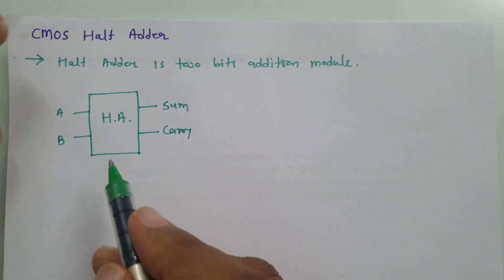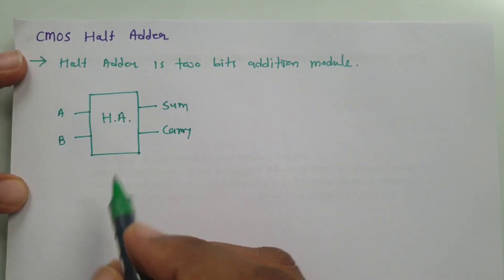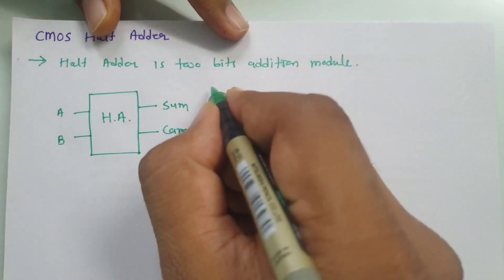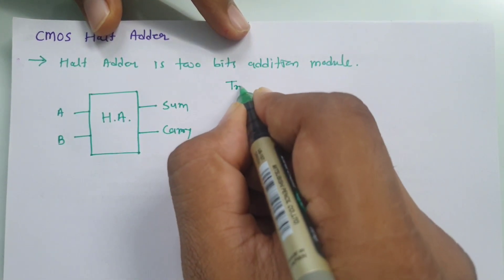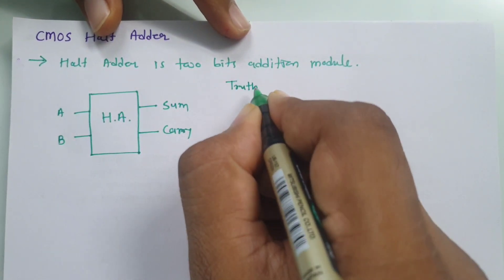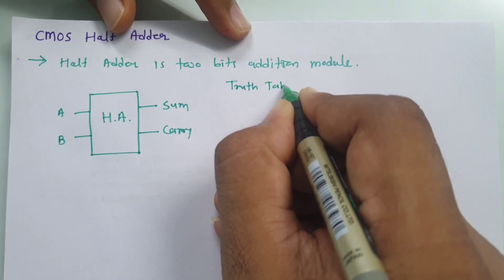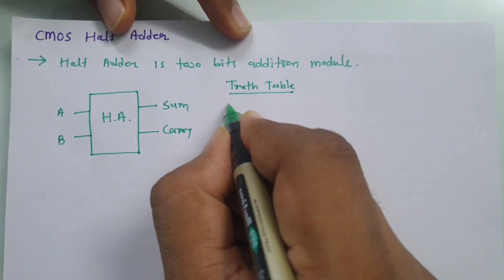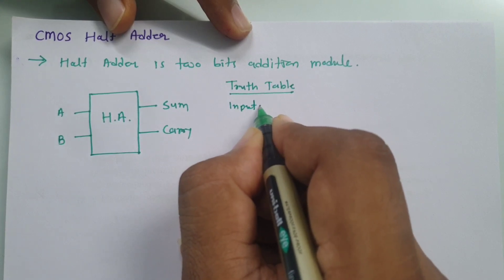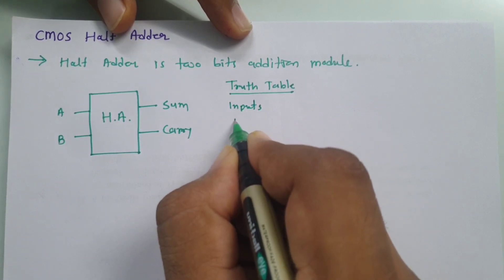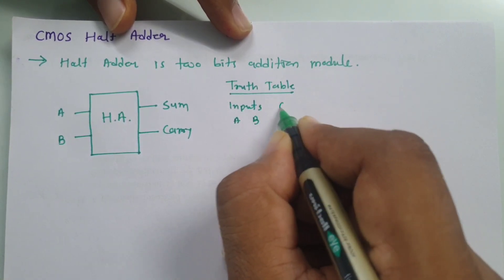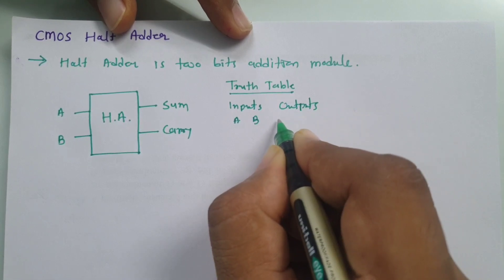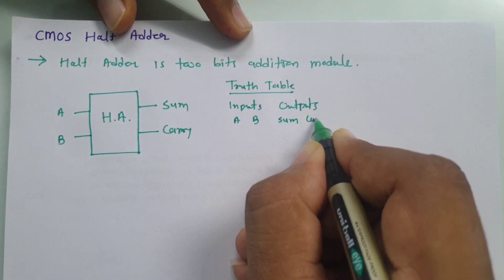That is the basic block of the half adder. Now if you see the truth table, it will justify how it functions. In the truth table we will have inputs A and B, and outputs Sum and Carry.